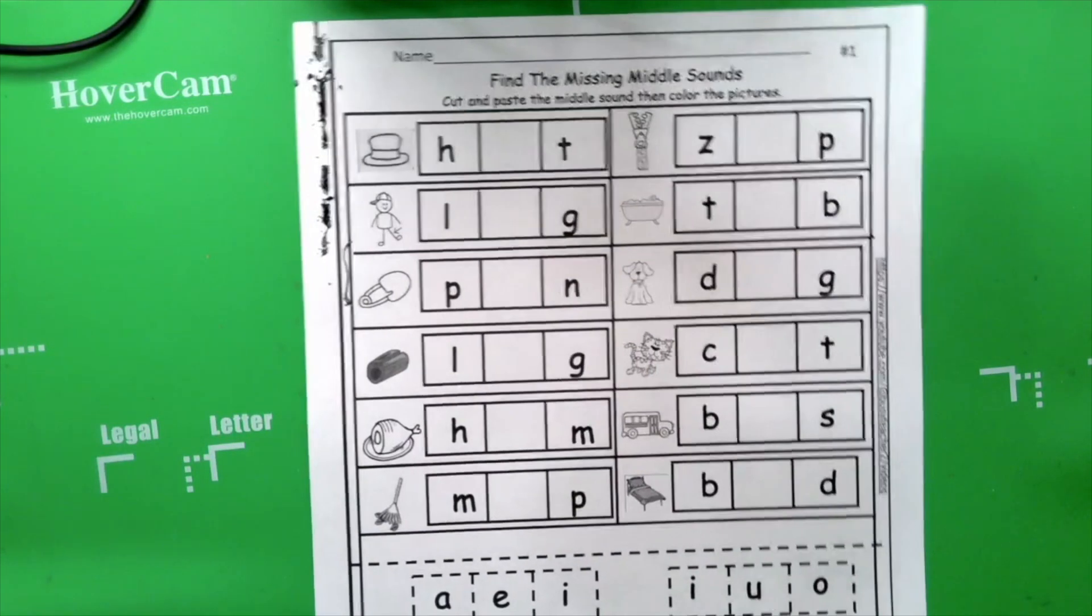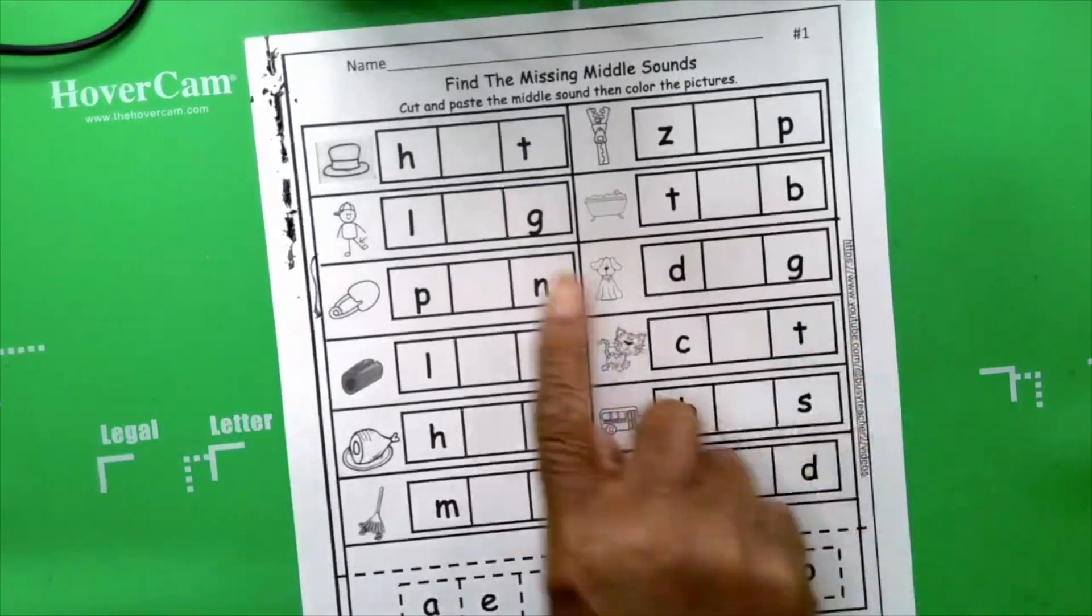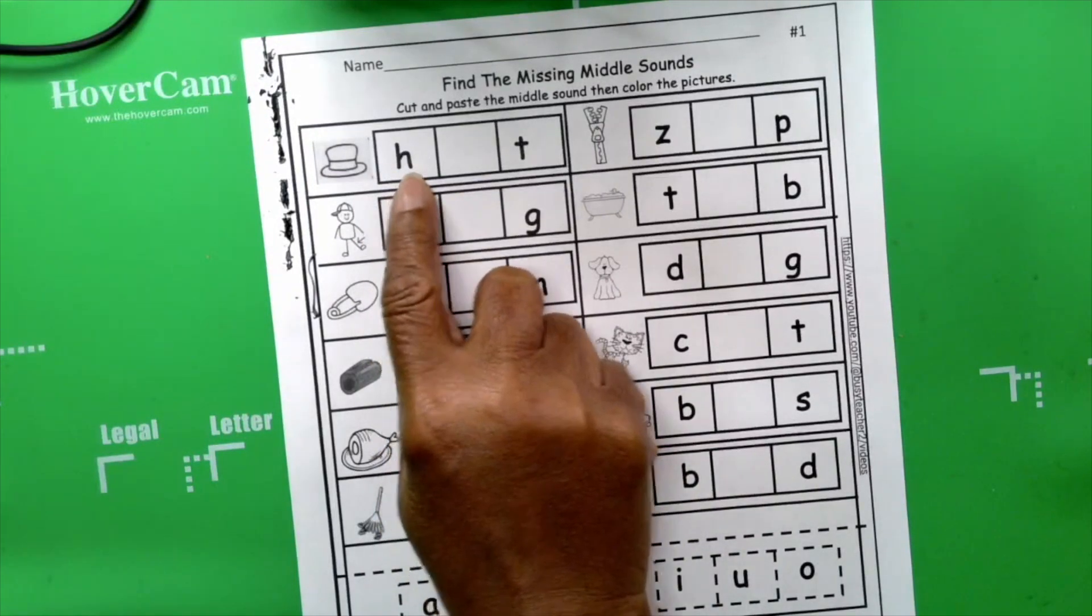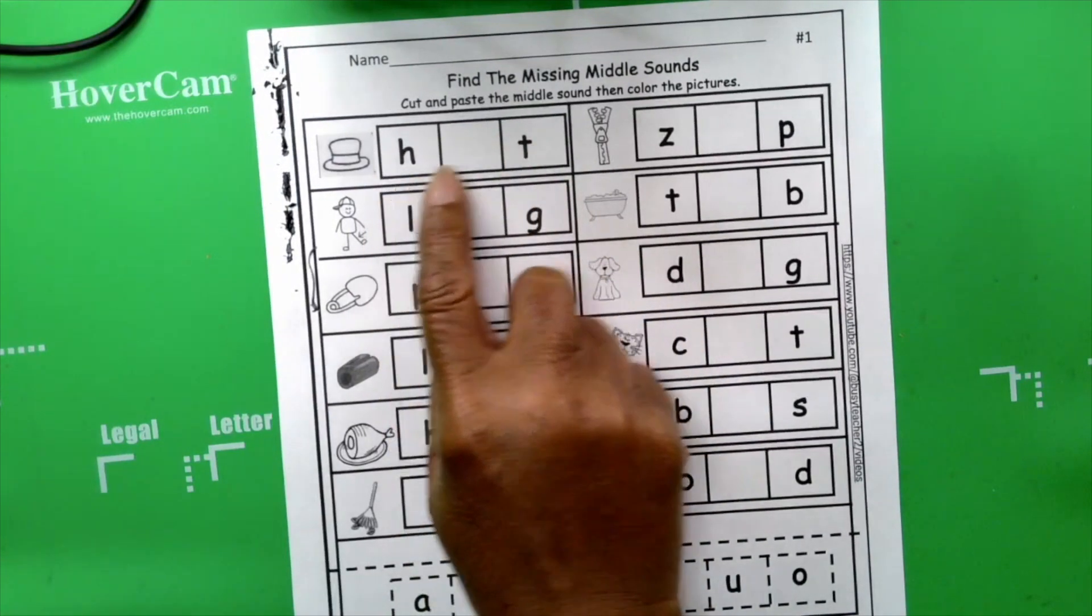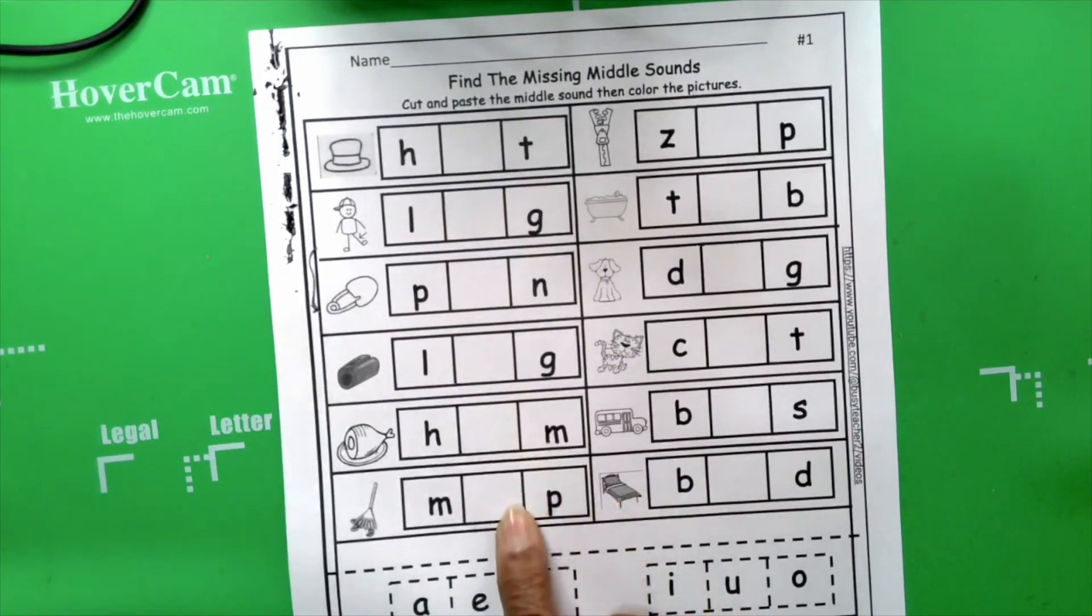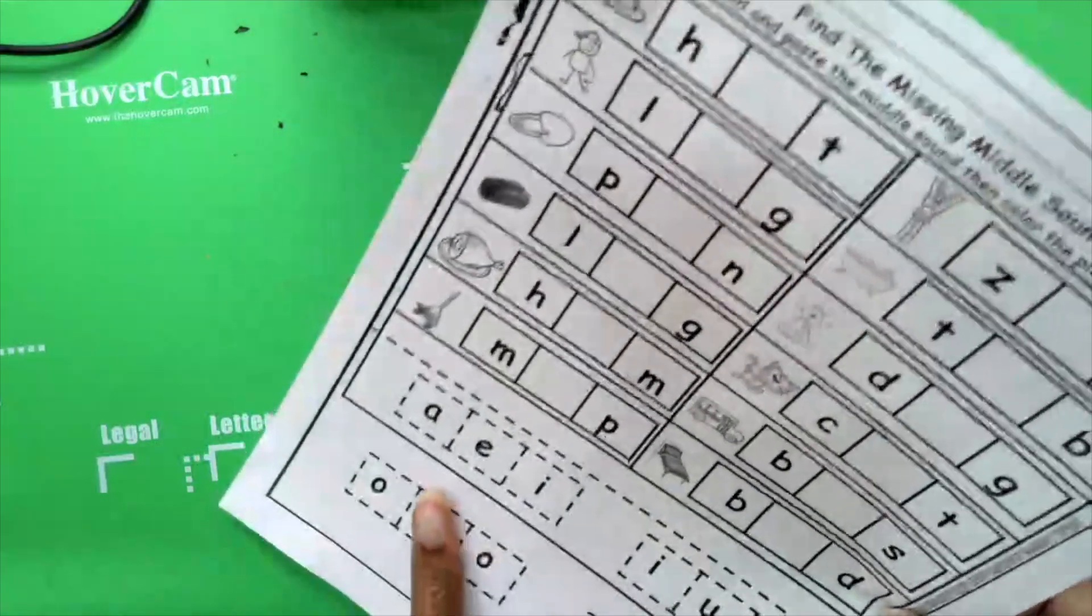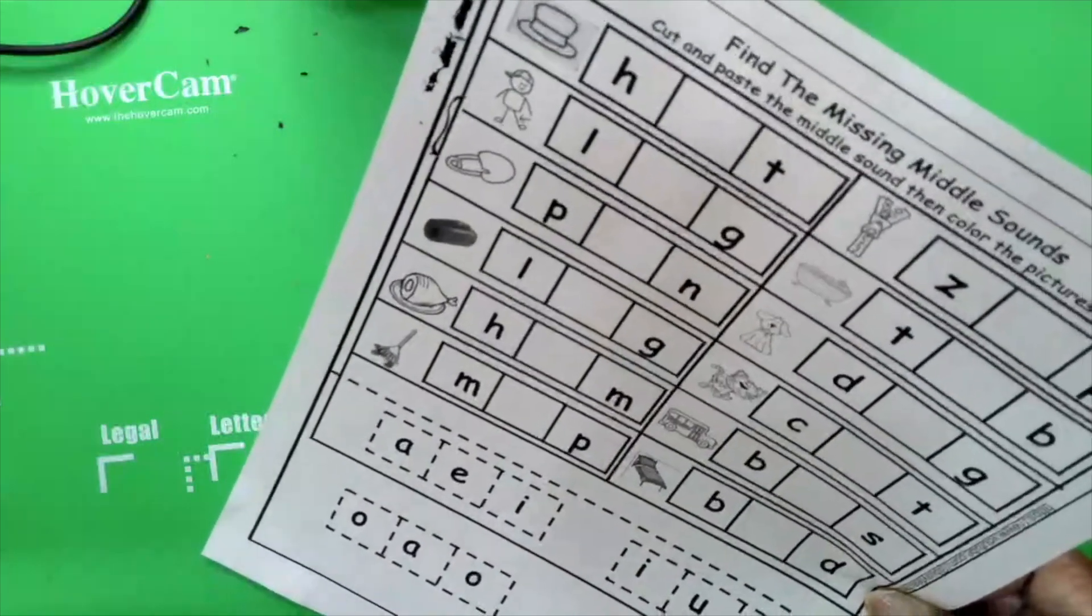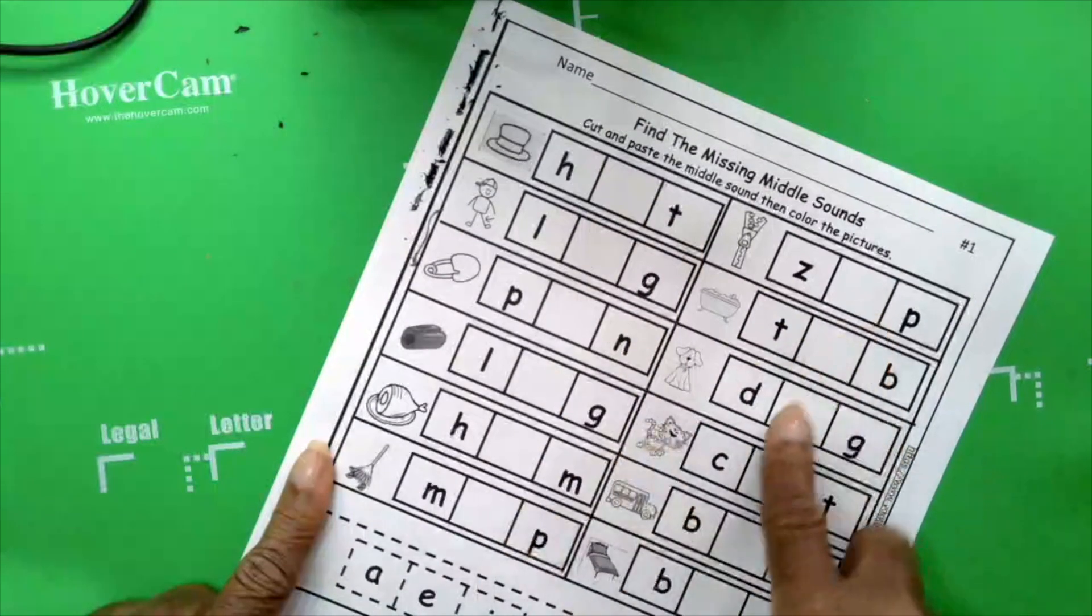Today we are going to find the missing middle sound. Take a look at the word, boys and girls. This is the beginning sound. This is the ending sound. We are going to find the middle sound. We're going to cut out the letters at the bottom and all of these letters A-E-I-O-U are all what? They're vowels. So the word is missing the middle vowel.